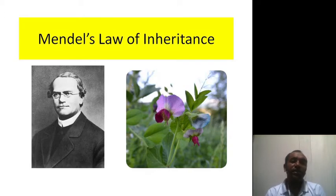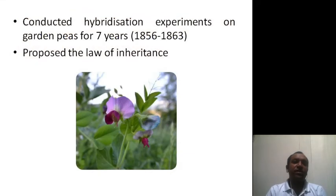Besides this, he deduced that genes come in pairs and are inherited as discrete units from each parent. So he conducted hybridization experiments on garden peas for seven years.